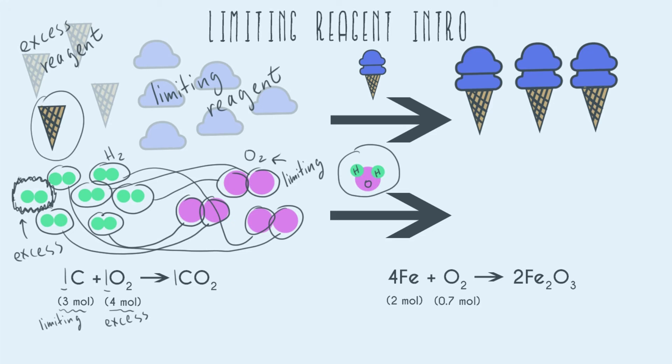We need two scoops of ice cream for every one cone. So even though we had more scoops of ice cream, we started out with six, and we only had four cones, we had less, our excess was still the one that had less because our ratio didn't require that we used as many cones. We needed more ice cream scoops.